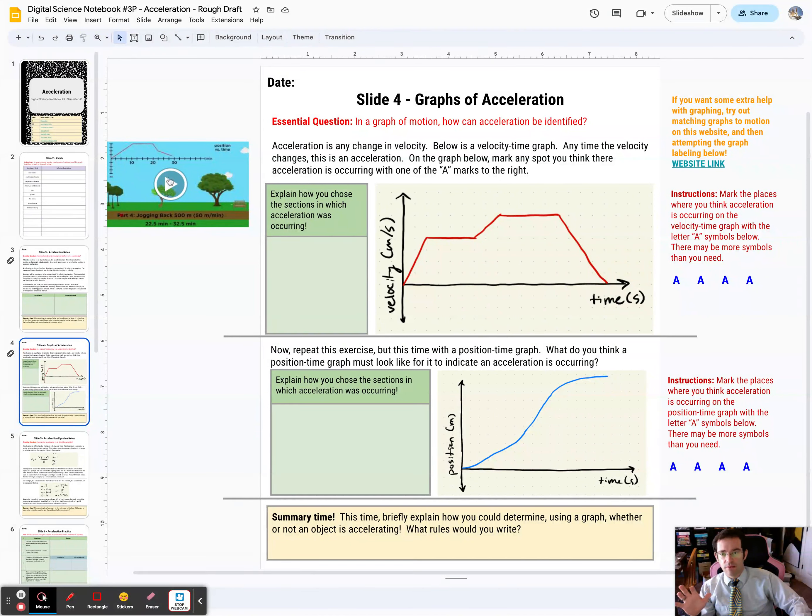To give you some help there's a video to watch on the left that explains some of the graphs of motion. And there's also a link here to a graphs and tracks activity where you can practice making these graphs yourselves by changing the motion of an object. And then it will show you the graph. These things may help you a little bit in understanding this so you can come back and answer these questions.